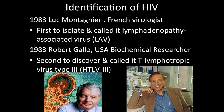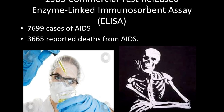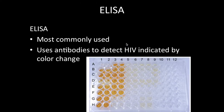Thanks to them, in 1985 a commercial test known as ELISA — enzyme-linked immunosorbent assay — was released, allowing AIDS to be detected and better prevented. By that time, 7,699 cases of AIDS were prevalent, with around 3,665 reported deaths. ELISA is currently the most commonly used test; it uses antibodies to detect HIV and is indicated by a color change — yellow indicates the presence of the virus, white indicates a negative result.